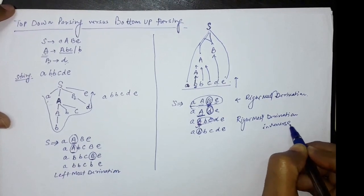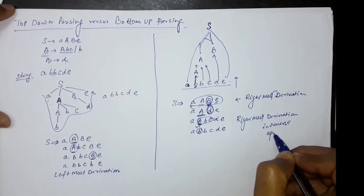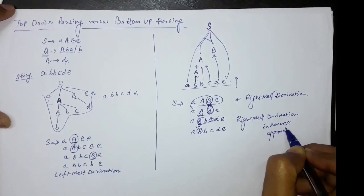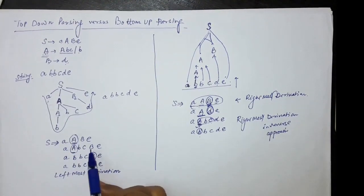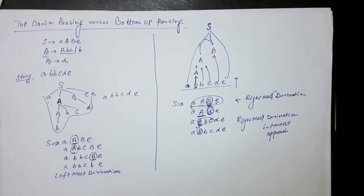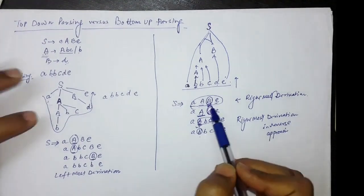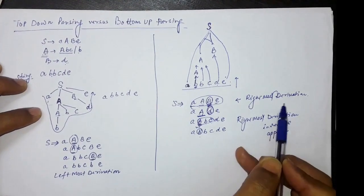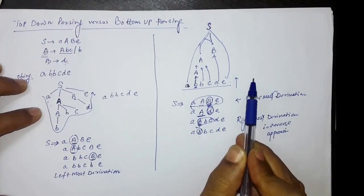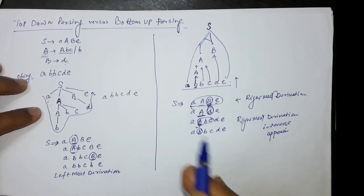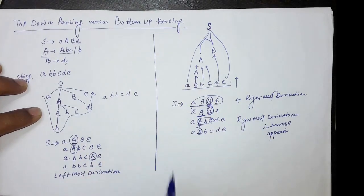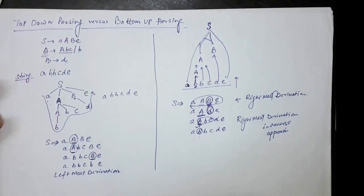To summarize: in top-down parsing we perform the leftmost derivation, while in bottom-up parsing we perform the rightmost derivation in reverse. Thank you.